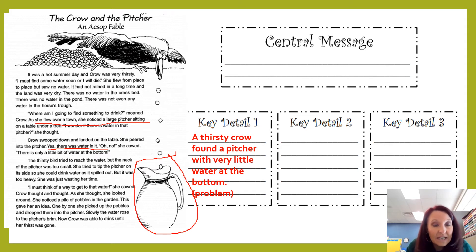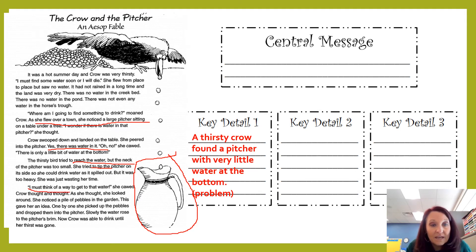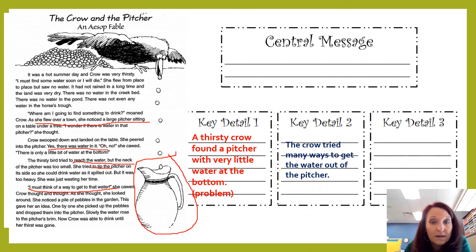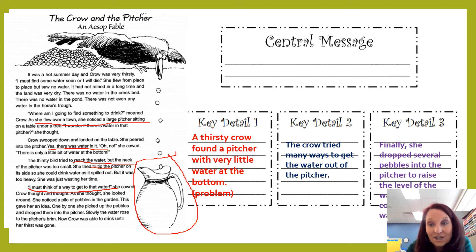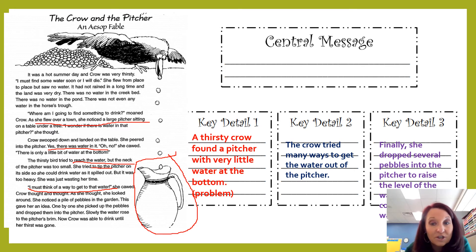She was thinking and thinking, and she tried everything. She tried to tip the pitcher, but it was too heavy. She also tried to reach the water, but the neck of the pitcher was too small. She said to herself, 'I must think of a way to get to that water.' Then she realized that if she put pebbles into the pitcher, the water level would rise. So we know that the crow tried many ways to get water out of the pitcher, and finally she came up with the idea of dropping pebbles in, which raised the water level so she could drink.